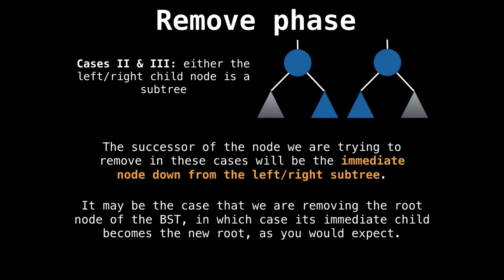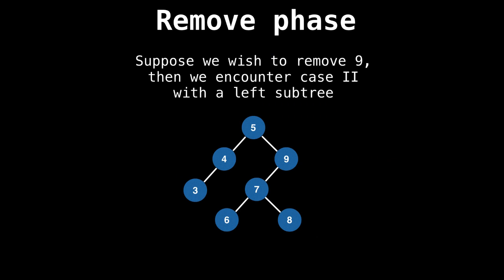Now for cases two and three, where there is only a left or a right subtree. In these cases, the successor node is the immediate child of that left or right subtree. The reason the successor is the immediate node down from the node we're removing is that it is the next node which is either greater than it in the case of right subtree or less than it in the case of a left subtree.